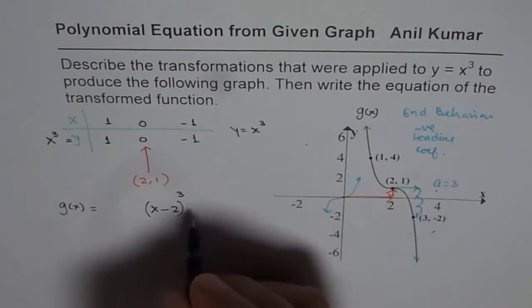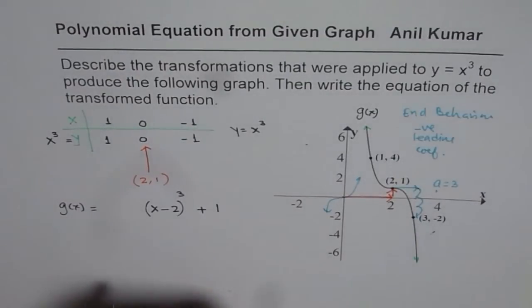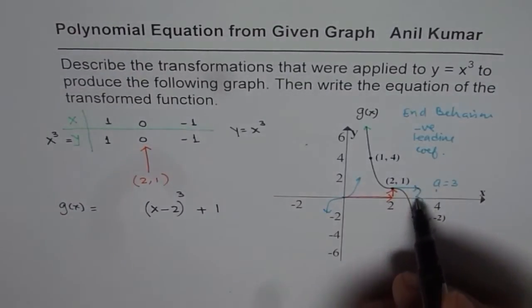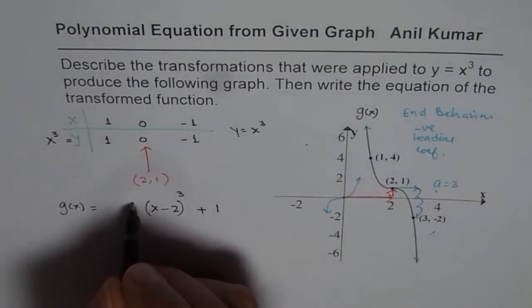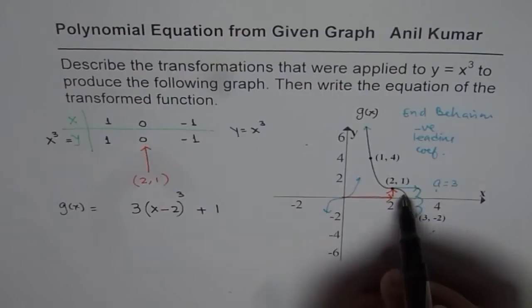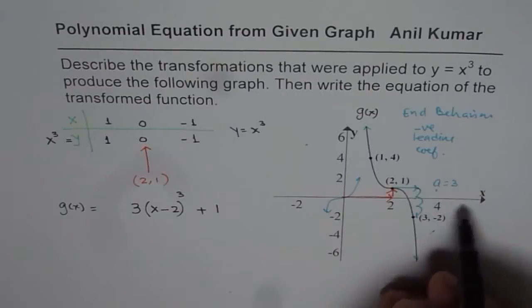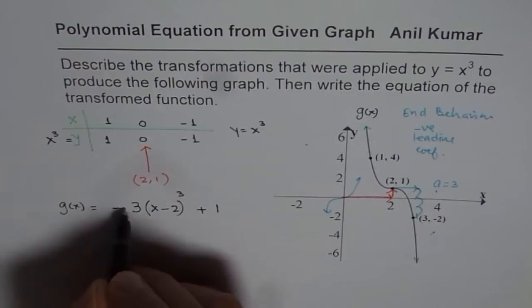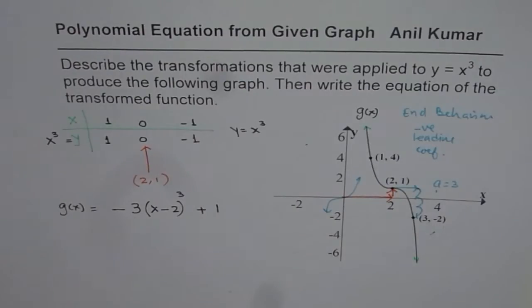It has been moved one unit up, so I'll write +1 here. Since it moves three units next time, that means there is a stretch of 3. And as the end behavior changes, the graph has been reflected on the x-axis, so we get negative here. So -3(x - 2)³ + 1 becomes the equation for this particular graph.